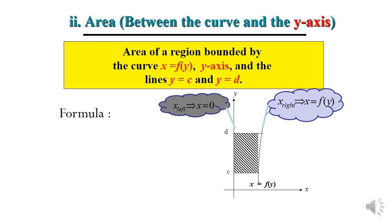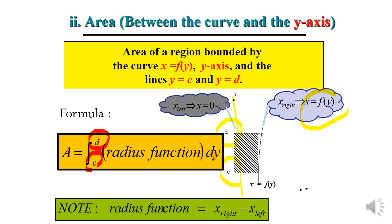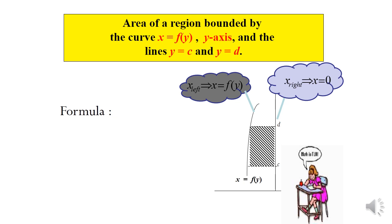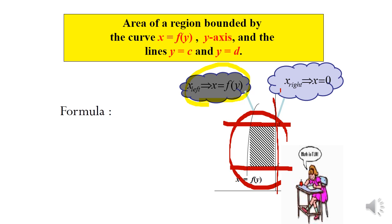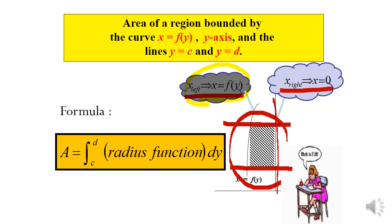Area between the curve and the y-axis: for a region bounded by x = f(y), the y-axis, and the lines y = c and y = d, the formula is the integration of the radius function dy from c to d. Note that the radius function equals x_right minus x_left. When the region is on one side of the y-axis, the formula uses integration of the radius function dy from c to d, where radius function is x_right minus x_left.